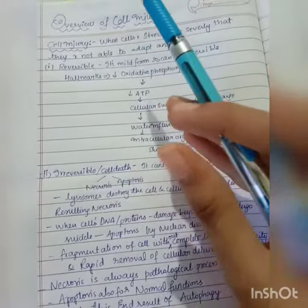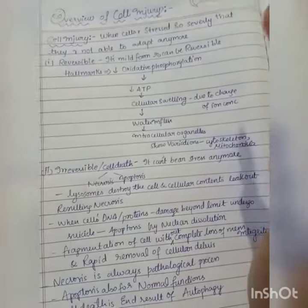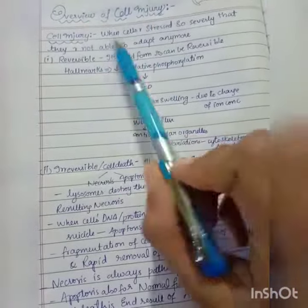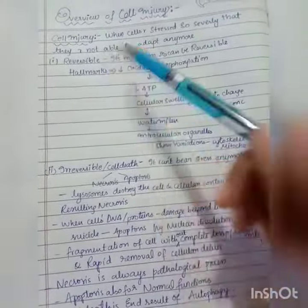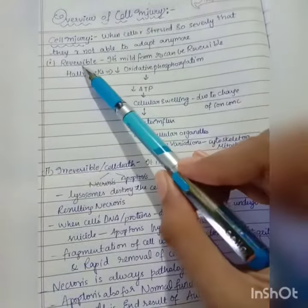Whenever the cell can't undergo any adaptation, it's almost like a frustrated stage for the cell. This is nothing but cell injury. It is of reversible type and irreversible type.